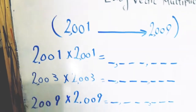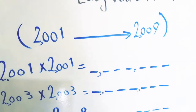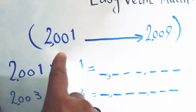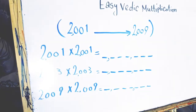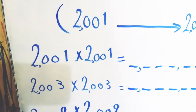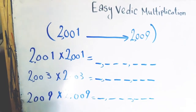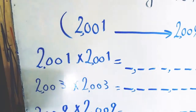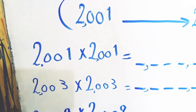We will multiply any number from 2001 up to 2009 by itself — in other words, we can square any number from 2001 up to 2009 in just three seconds. The first example: we want to multiply 2001 by itself using the Vedic multiplication method. First, we look at the first digit and multiply it by itself.